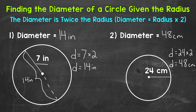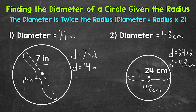The diameter goes all the way across the circle. It starts at one point on the circle, goes through the center, and to another point on the circle. And again, it is twice the radius, so the diameter here is going to be 48 centimeters.